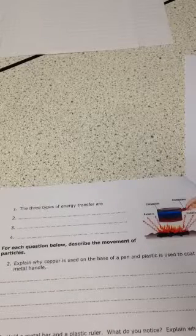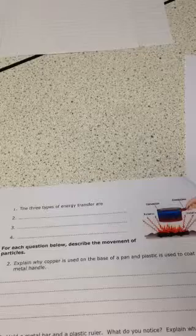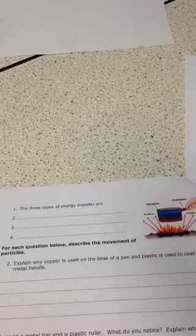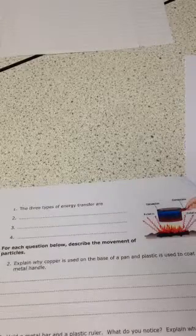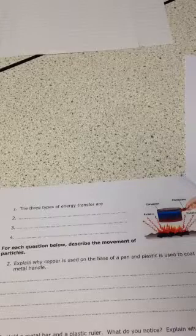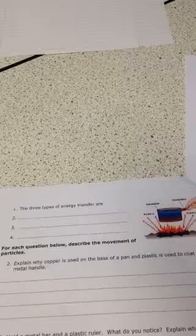For each of these questions, and this is the way it's going to be in the exam, it's giving you a feature of the saucepan and asking you, for example in this first question, why they're like that. Explain why copper is used on the base of the pan and plastic is used to coat the metal handle. Well, we want the heat to transfer to the liquid, to the water.